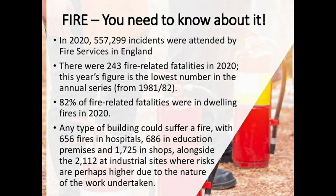Any type of building can suffer a fire. In that year there were around 656 fires in hospitals, 686 in educational premises such as schools, colleges and universities, 1,725 in shops, and around 2,100 in industrial and commercial premises. These numbers add up to well over 3,000 — reinforcing how dangerous fire can be across all sectors, including hospitals, schools, shops, and industrial sites.